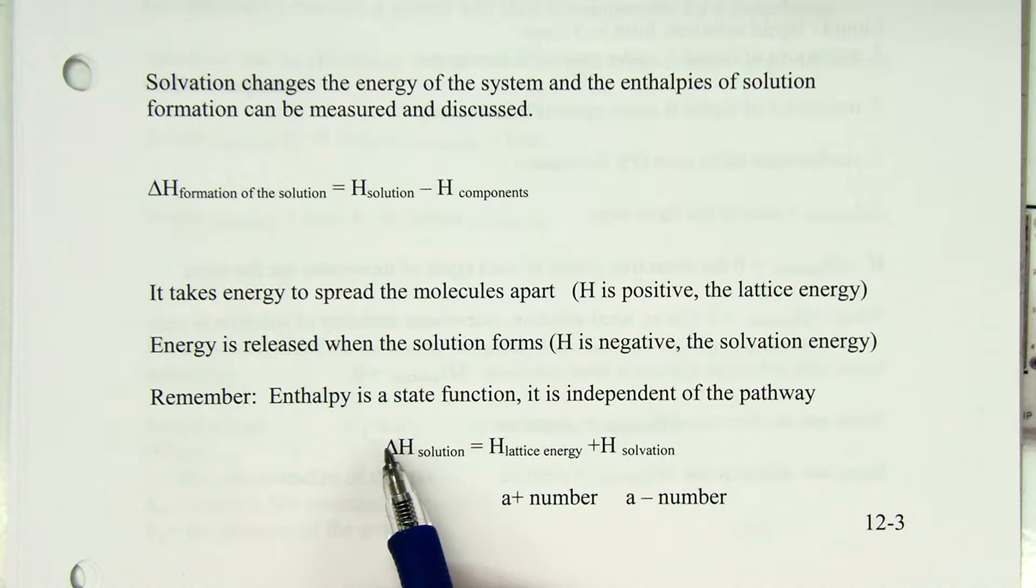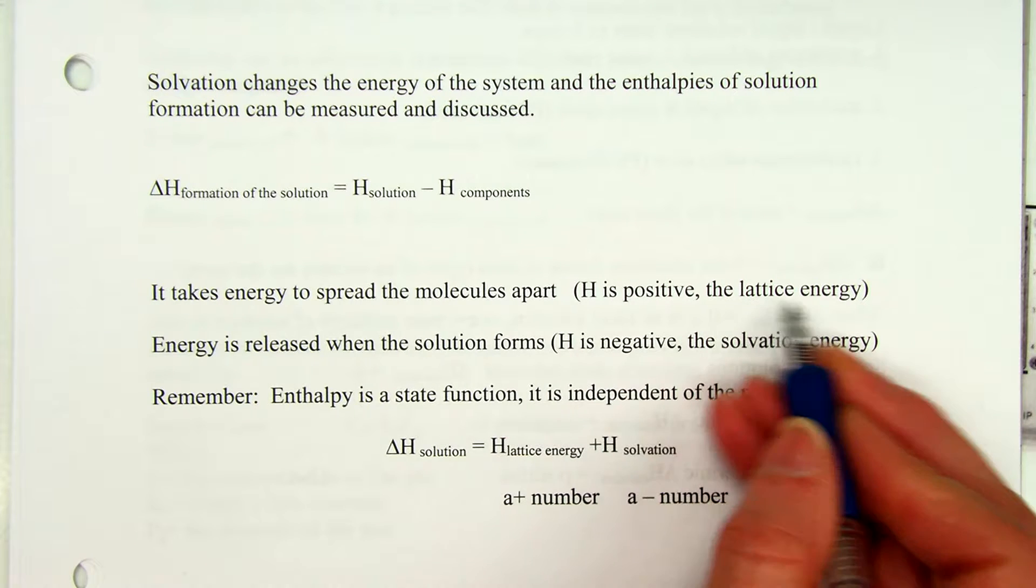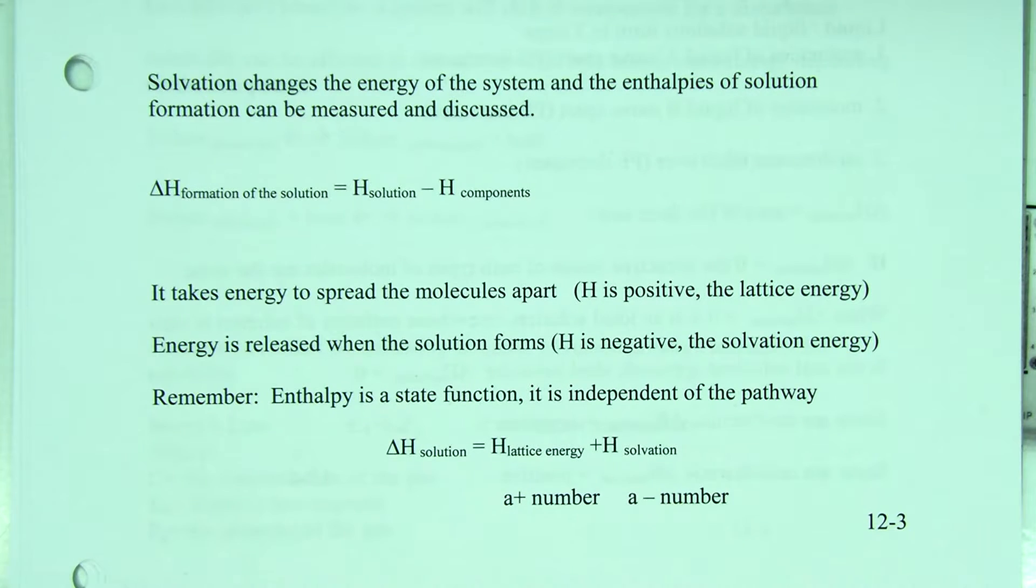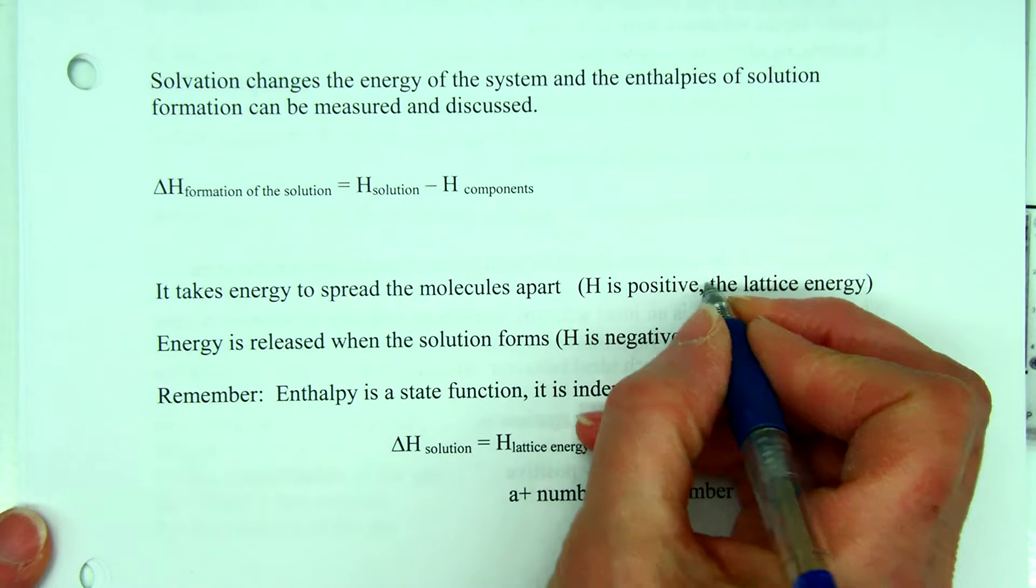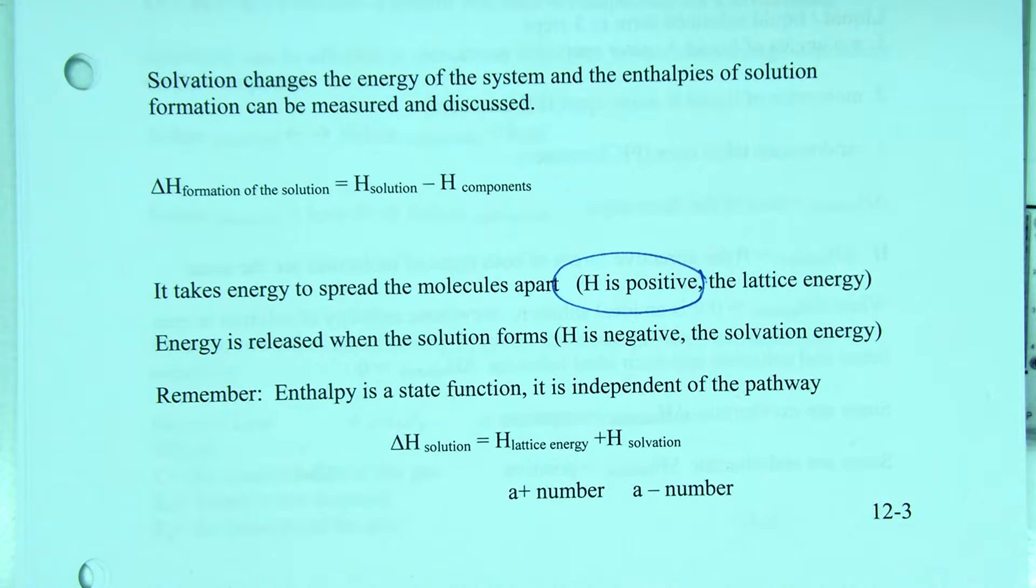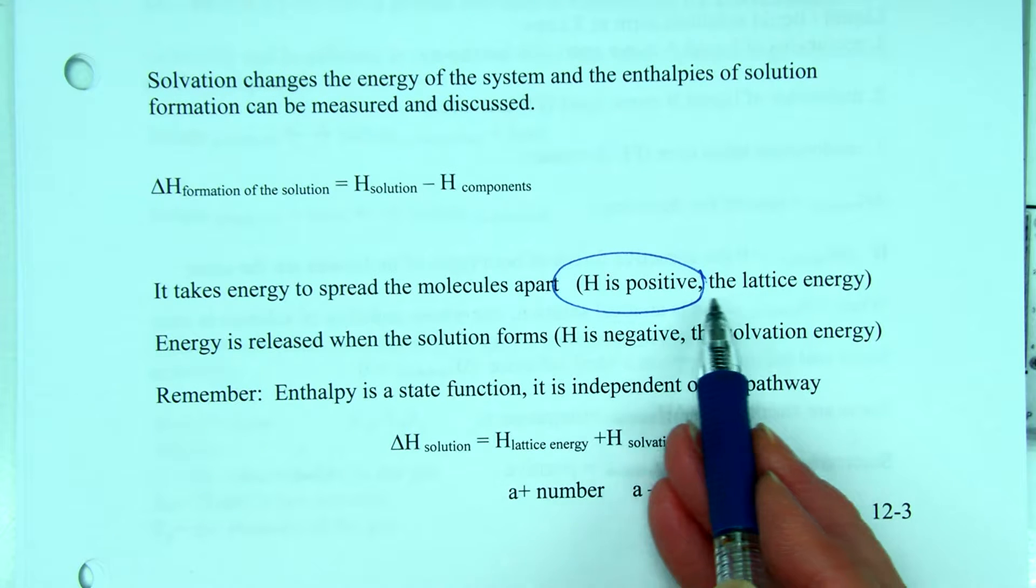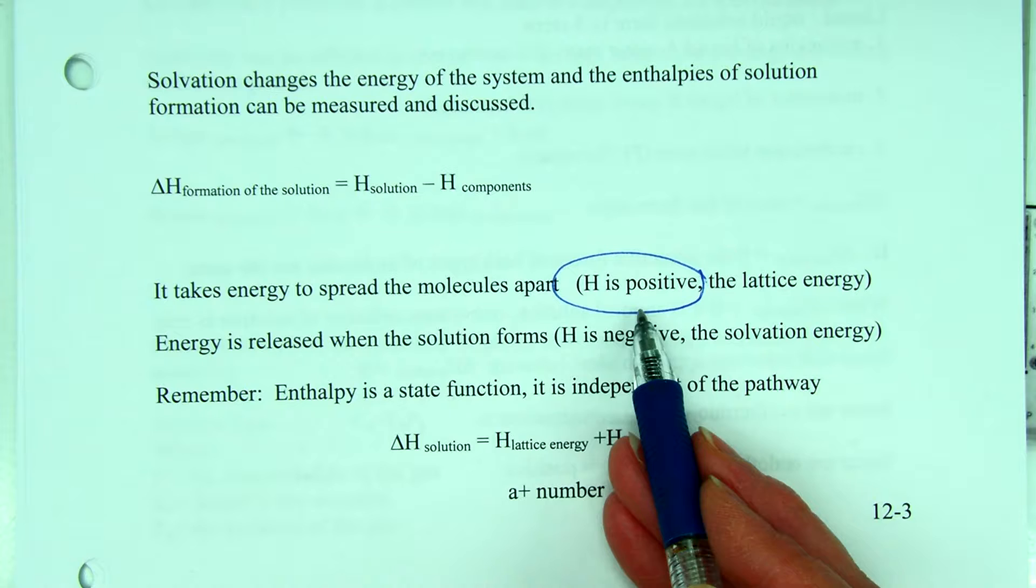So we talk about that and that energy is the lattice energy. By definition, the lattice energy is the energy released when you form a lattice. It can also be the energy required when you break the lattice apart. In this case we're breaking the lattice apart, so the enthalpy is positive. Now the tricky part is if you look this up in a chart, you're going to see it listed as a negative number. It's your job to change the sign to positive because in this discussion we are breaking apart the lattice.